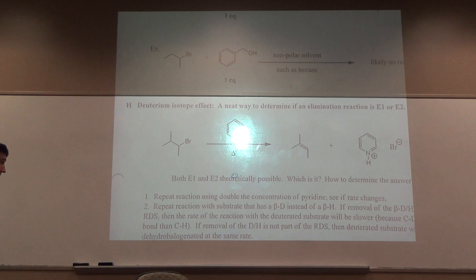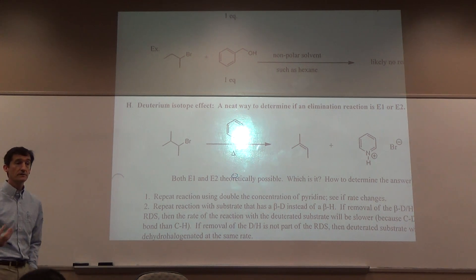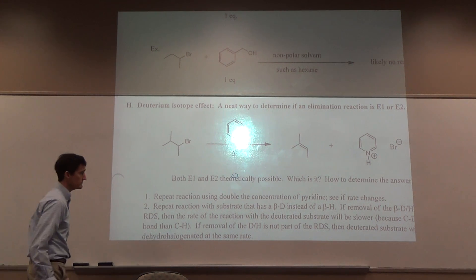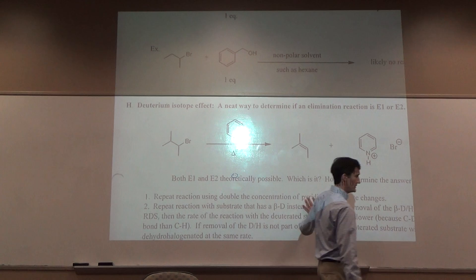Well, that's only going to matter if the bond is being broken in the rate determining step. Which mechanism is the beta hydrogen or beta deuterium bond broken in the rate determining step? E2. Basically, the deuterium will only give you a rate change with E2. If it's E1, you don't get a rate change because breaking that deuterium bond would happen in the fast step there.